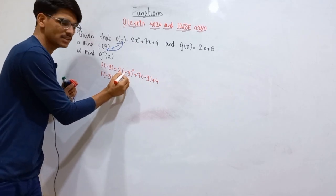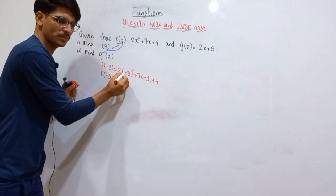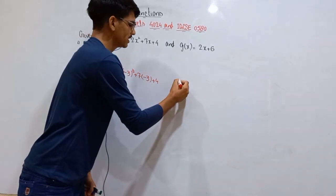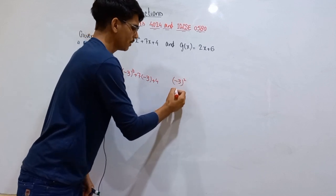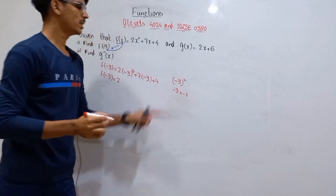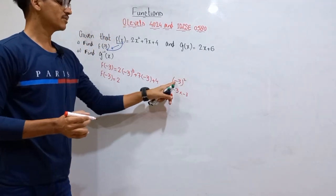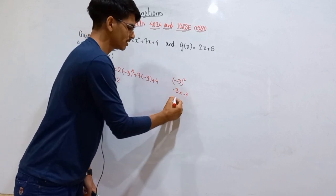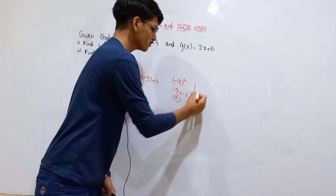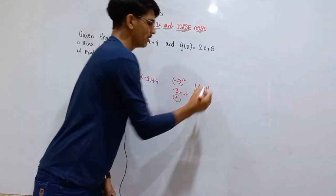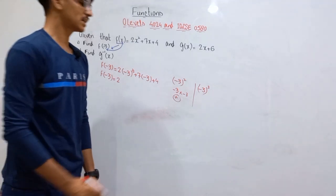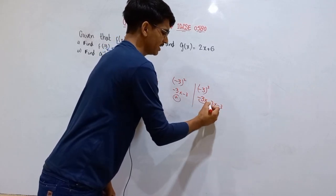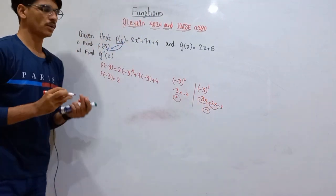Whenever you have a negative sign with the base and the power is an even number, your answer will always be positive. For example, (-3)² = (-3) × (-3): minus times minus gives plus, so the answer is positive. Whenever the power is an odd number, the answer is always negative. For example, (-3)³ = (-3) × (-3) × (-3): plus times minus gives minus, so the answer is negative.